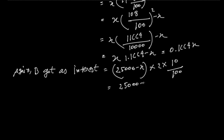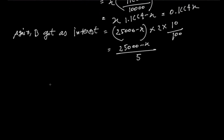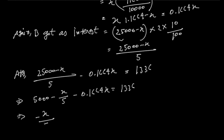For B, the portion is 25,000 minus x divided by 5. According to the question, B's interest portion minus A's interest portion: 0.1664x equals 1336. So 500 minus x by 5 minus 0.1664x equals 1336, and 0.1664x equals 5200.